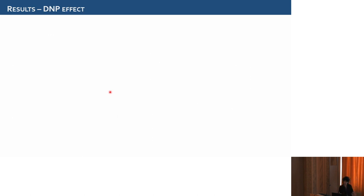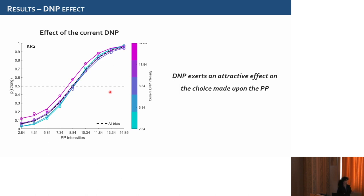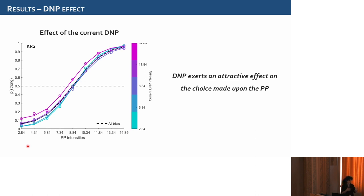Now we want to see the impact of the irrelevant stimulus. Here we see the effect of the irrelevant stimulus via psychometric curves divided by DNP intensity. We see that the irrelevant stimulus exerts an attractive effect on the choice made for the relevant one — meaning that if the DNP was weak, there is an increased likelihood of judging the PP as weak, and if the DNP was strong, there is an increased likelihood of judging the PP as strong. Nevertheless, we have an asymmetry in this data, because weak PP intensities are more impacted by the presence of the DNP. This could happen because weak stimuli engage fewer neurons in their encoding, so the representation is more unstable.